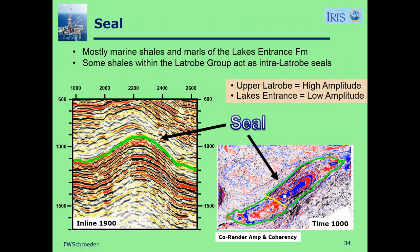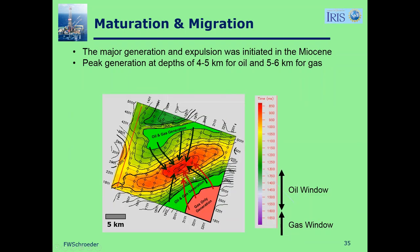For the seal, here's a seismic line with the unconformity — the reservoir below with higher and more continuous amplitude reflectors, the seal being moderate to low amplitude. There's a vertical inline and a time slice at 1,000 milliseconds — the top of the reservoir unconformity is in green, with a fault offset visible. You can see the seal is characterized by moderate to low amplitude and is fairly easy to map. One thing I haven't been consistent about: sometimes I show this unconformity as green and sometimes as red. That should be uniform throughout the presentation — I left the inconsistency in just to make that point.